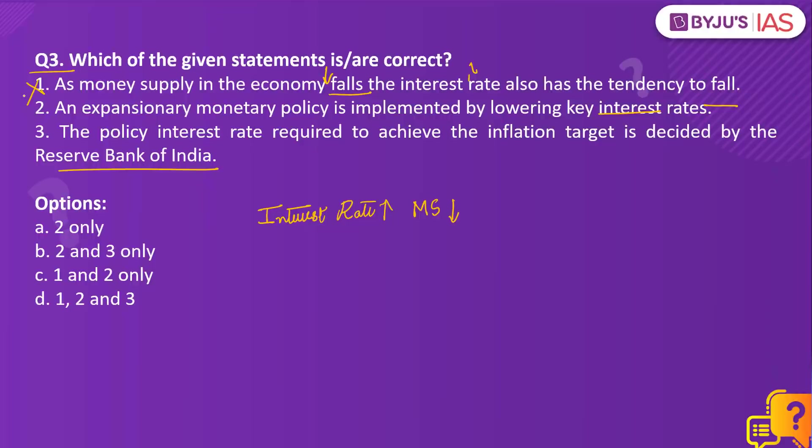Moving on to Statement 2. In managing inflation, the monetary policy can be expansionary or contractionary. In an expansionary monetary policy, the focus is on increasing the money supply in the economy. This is done by lowering the key interest rates, which in turn increases the liquidity in the market. Therefore, Statement 2 is correct.